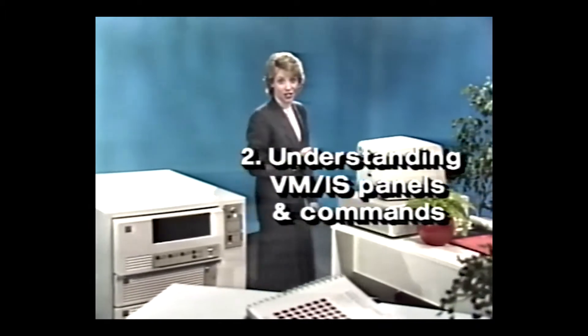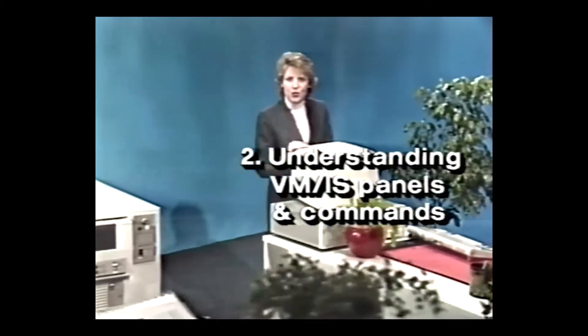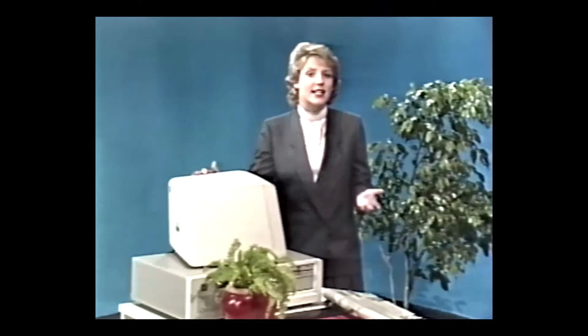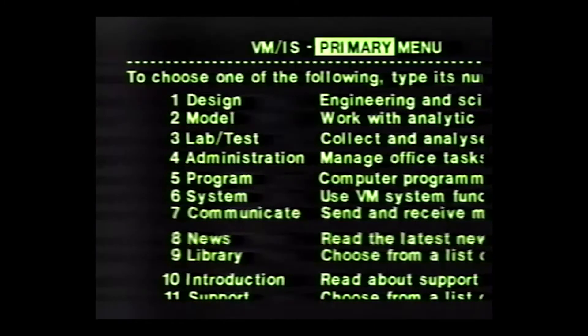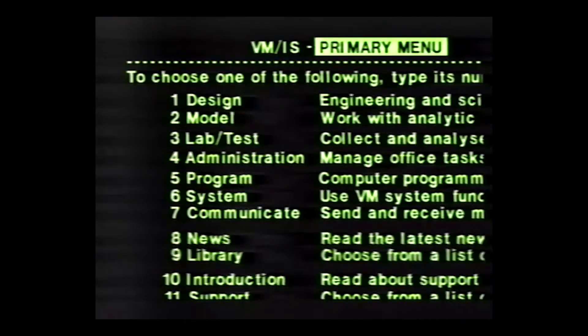Panels and commands are two ways of getting your system to do what you want it to do. Panels are screens that ask you to make a selection or provide some data. Panels are written in English rather than in a computer language. They're designed to lead you through the steps required to do your job. Here is the panel that appears when you start using VMIS — it's called the primary menu. Primary because it's the first menu you see, and menu because like a restaurant menu, this panel offers you a selection to choose from.